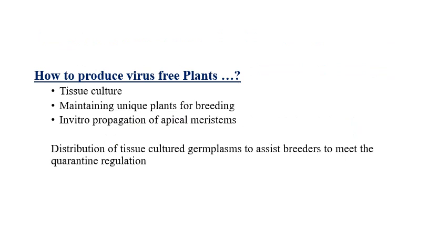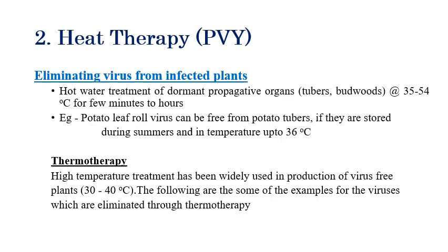Virus-free seeds or propagative materials are essential. Techniques for producing virus-free plants include tissue culture, plant breeding, and in vitro propagation of apical meristem. After production, the nuclear or propagating materials are distributed to plant breeders so they can be distributed across nations.